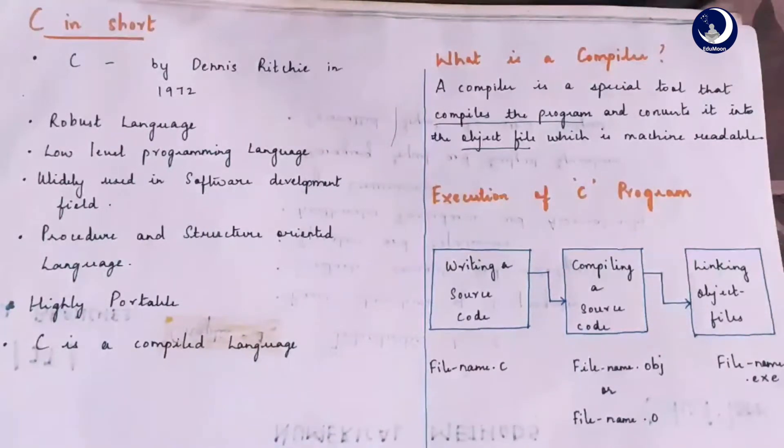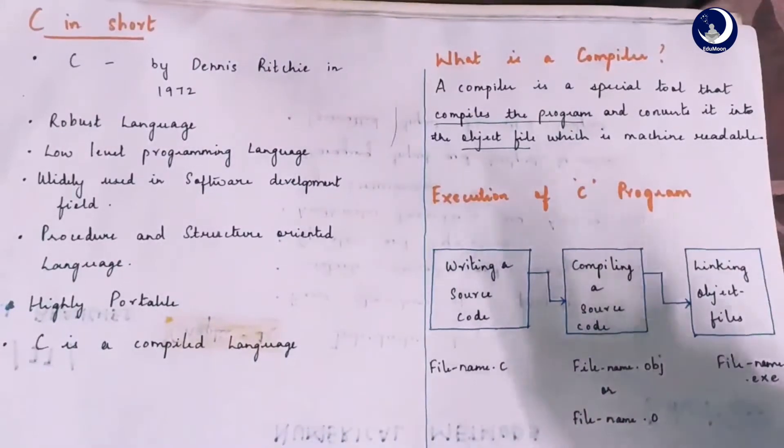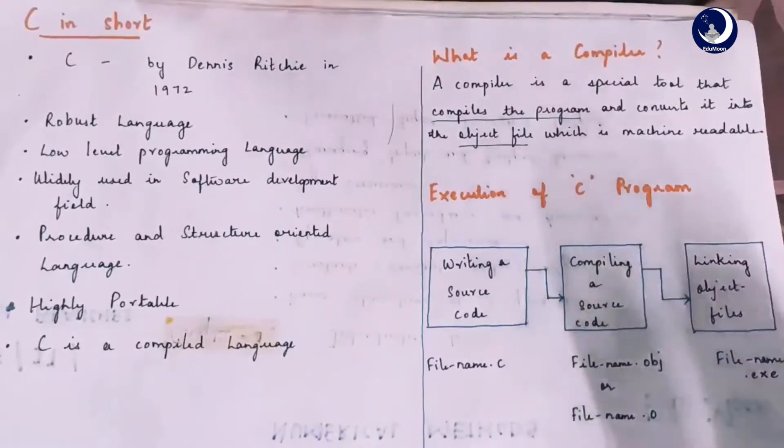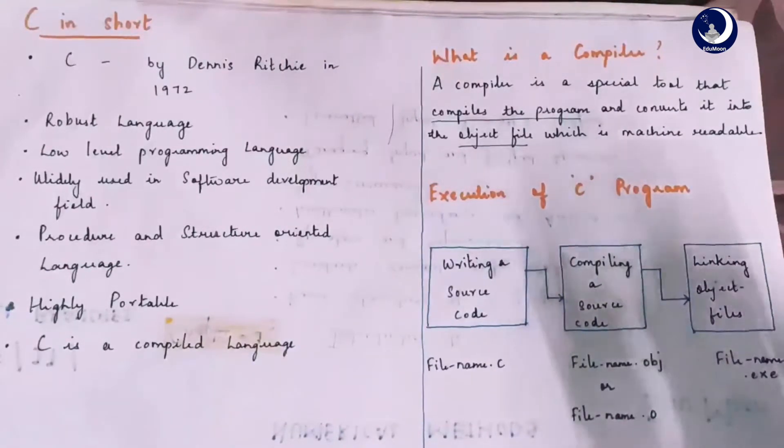C is a compiled language. Now, what is a compiler? A compiler is a special tool that compiles the program and converts it into the object file which is machine readable.